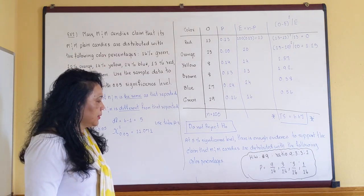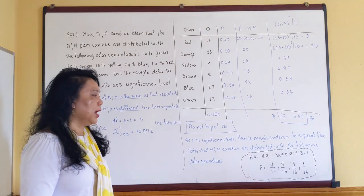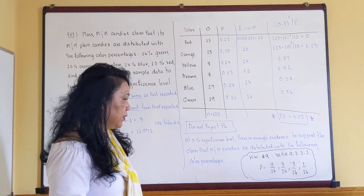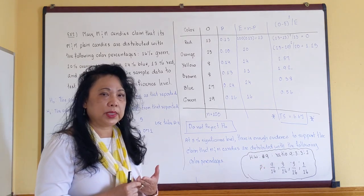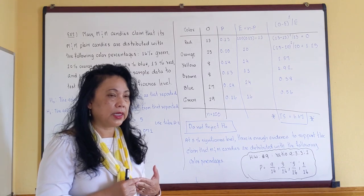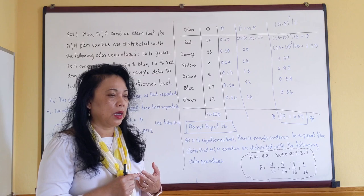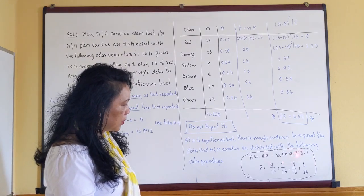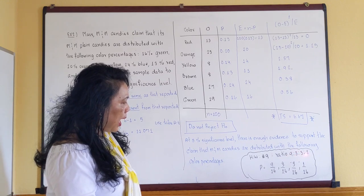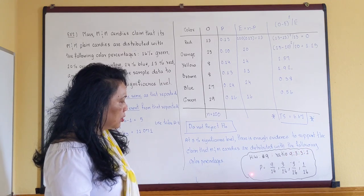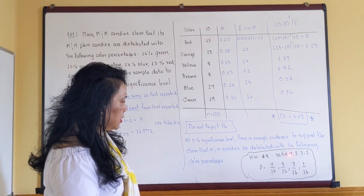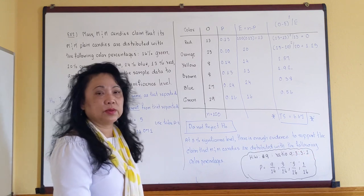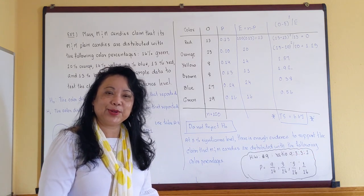We've finished 11.1. I want to mention the homework, specifically problem 9, because you might get confused. It talks about two types of peas: yellow smooth, yellow wrinkle, green smooth, and green wrinkle. The ratio given is 9 : 3 : 3 : 1. Adding all ratio parts gives 16, so the probability of each type will be 9/16, 3/16, 3/16, and 1/16. Have a good weekend, bye!